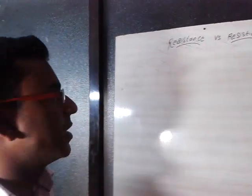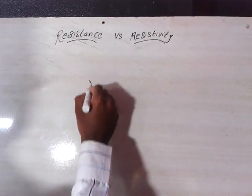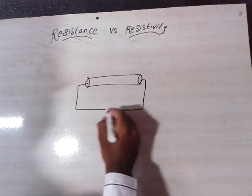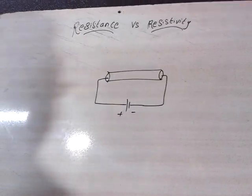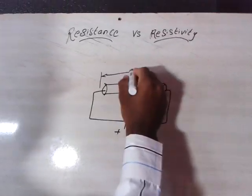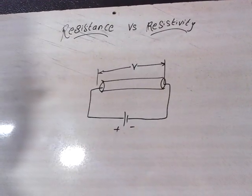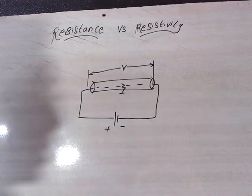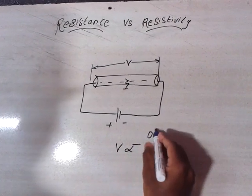Welcome. In this video I'm going to help you understand resistance and resistivity. First of all, let's look at what resistance means. Consider this is a wire, and this is a battery connected across it — positive and negative. The potential difference across this wire is V, and the current flowing through this wire is I.